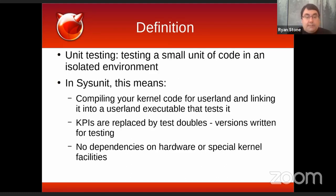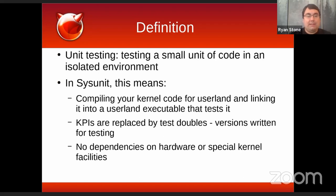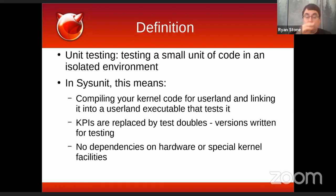A unit test, if you're not familiar with the concept, is taking a very small unit of code and testing it in an isolated environment. For FreeBSD, this means you're going to take a little piece of kernel code, compile it into a userland object, link it into a userland executable, and that executable will run tests against your code.